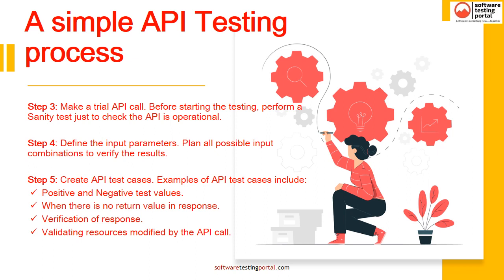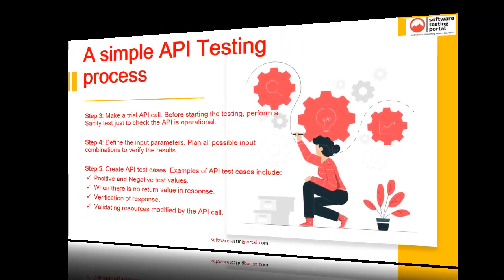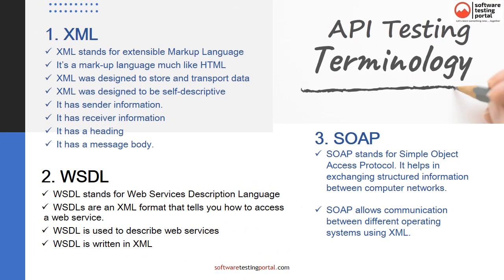Step 4 is to define the input parameters. Plan all possible input combinations to verify the results and determine whether the API performs as expected. Step 5 is to create API test cases. After all preparations are done, write and execute test cases, then compare actual results with expected ones. Examples of API test cases may include positive and negative test values, checking when there is no return value in the response, verification of response after data structure updates, and validating resources modified by the API call.